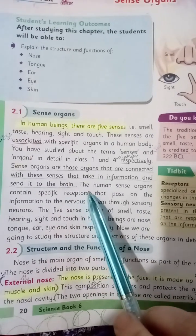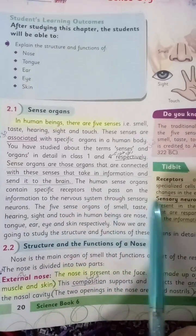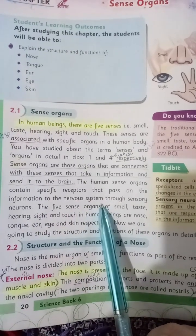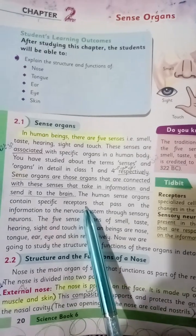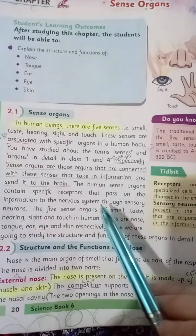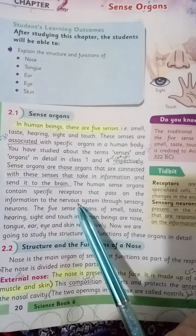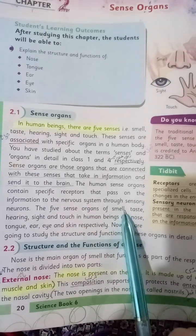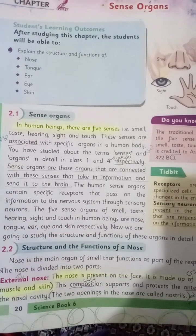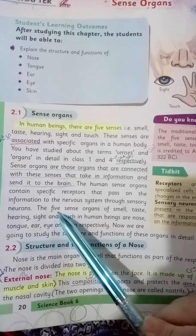The human sense organs contain specific receptors that pass on information to the nervous system. In our sense organs there is a special receptor, which is a specialized cell that detects information and passes it on to our nervous system through sensory neurons. This is how we can tell what we are smelling.